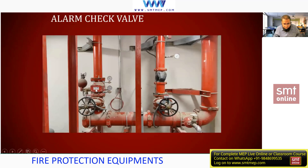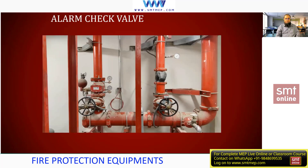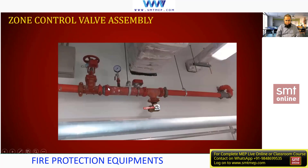Next, alarm check valve. You see on the left side - this complete assembly is called alarm check valve. We'll discuss it in detail in NFPA 13. This is for the sprinkler system. Here is an OS&Y gate valve - we'll discuss this also. Here we have a supervisory switch. This complete assembly we can call alarm check valve. The different components and purpose will all be discussed after completing the zone control valve assembly topic.